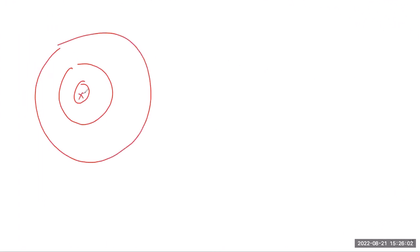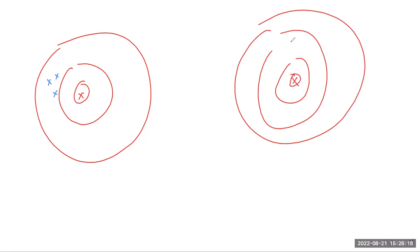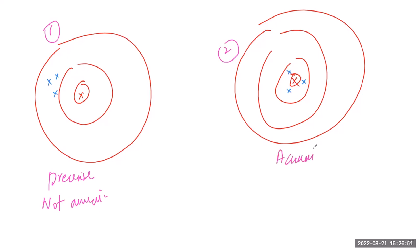We can take another example — let's say we have a bullseye, and this is the actual value. In case one, some person throws darts and they land here, here, and here. In case two, another person throws darts and they land close to the bullseye. In case one, the measured values are far from the actual value but close to each other — so they are precise but not accurate. In case two, the measured values are close to the accurate value and also close to each other — so it is both accurate and precise.